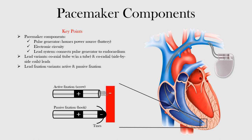Here you can see the pulse generator, and from that you have these leads traversing and coming through the vein into the superior vena cava, into the right atrium. There is a right atrial lead, and then there is one down in the right ventricle. So this is the right atrium and this is the right ventricle. You can see the leads placed right there.